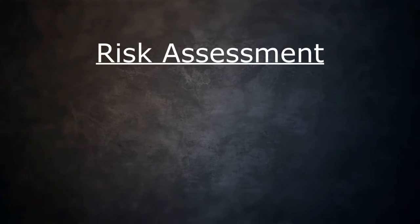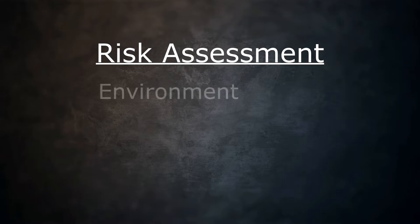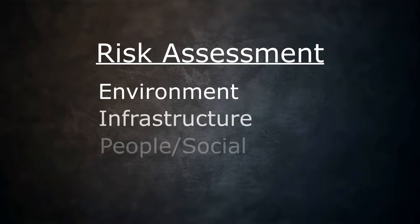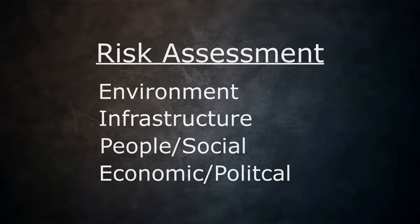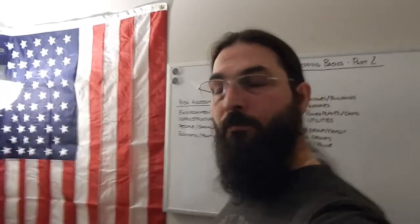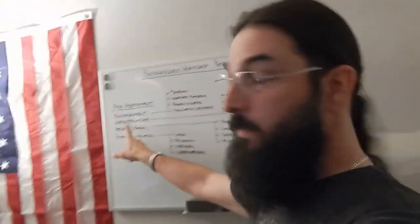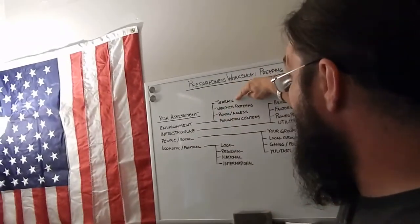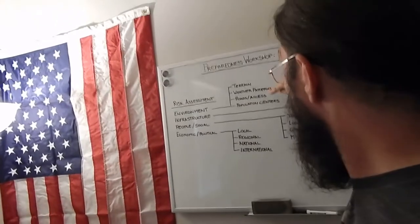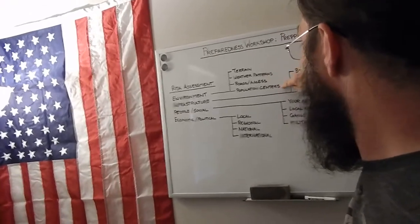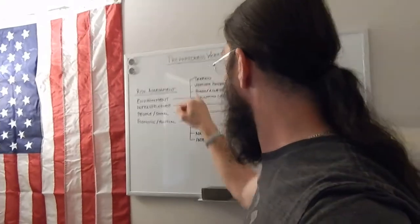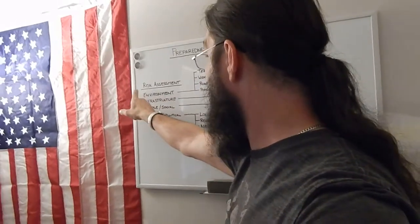In order to create a risk assessment, you'll need to do a bit of research on the area you live in. Important things to research are environment, infrastructure, people and social groups, and the economic and political state of the area you live in. When looking at environment, you're going to want to look at terrain, weather patterns, roads and access, and population centers. These things are all going to affect your environment for your risk assessment.